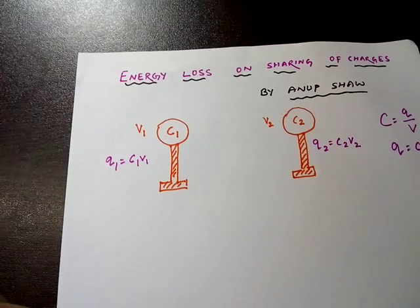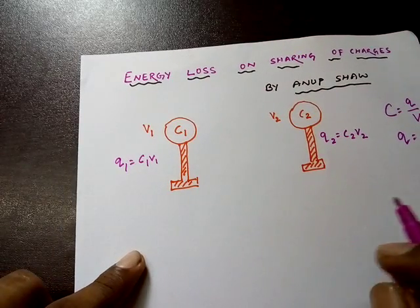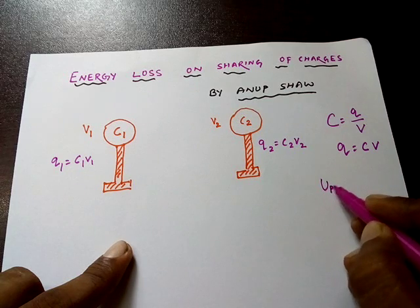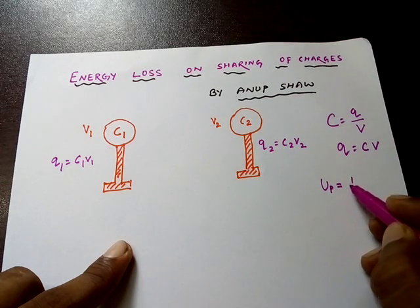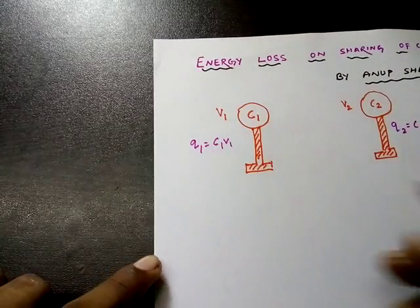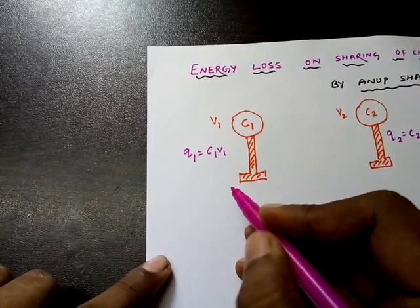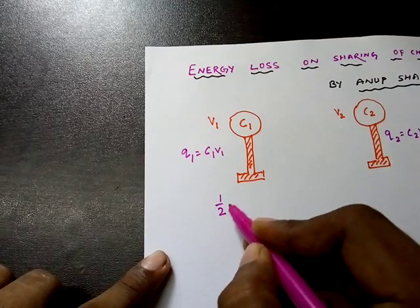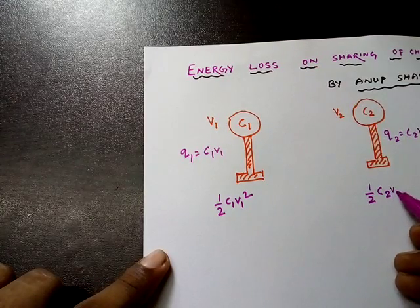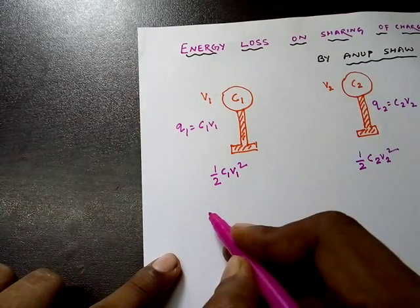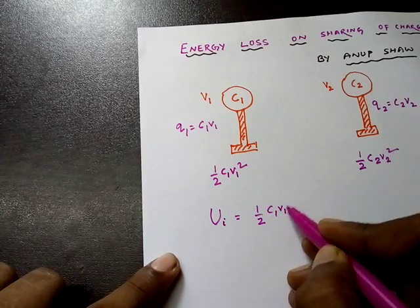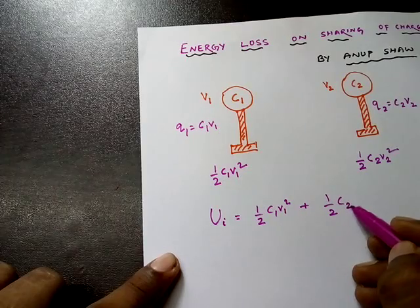From the previous lecture, we know that the potential energy is U = ½CV². So the initial potential energy of the first conductor is ½C1V1², and of the second conductor is ½C2V2². The total initial energy U_i is equal to ½C1V1² + ½C2V2².